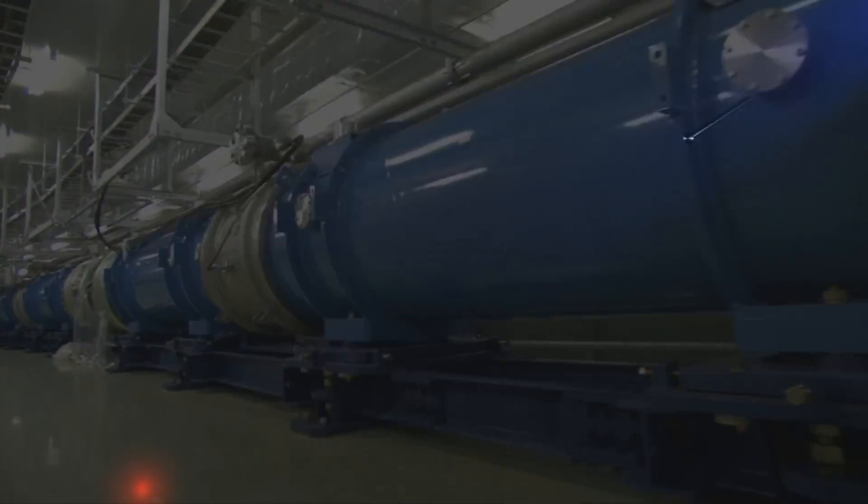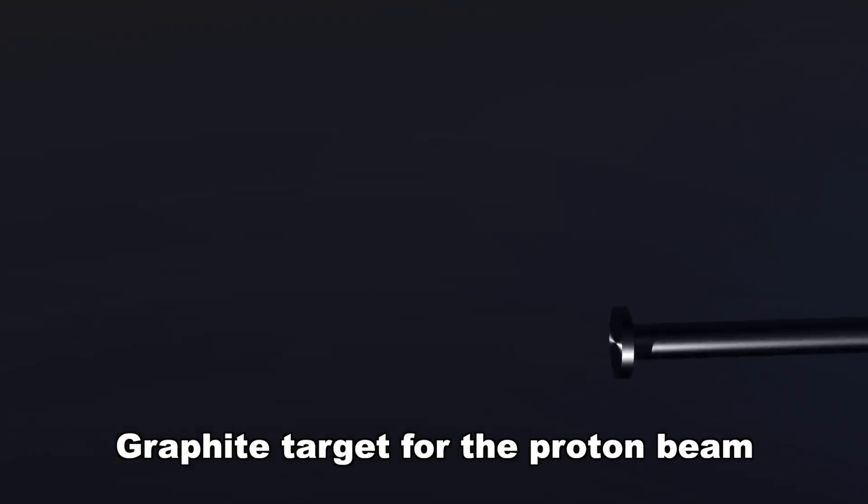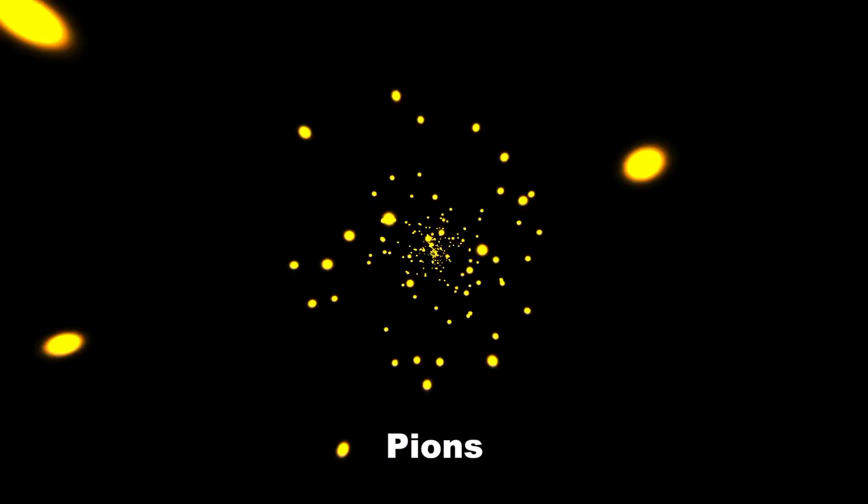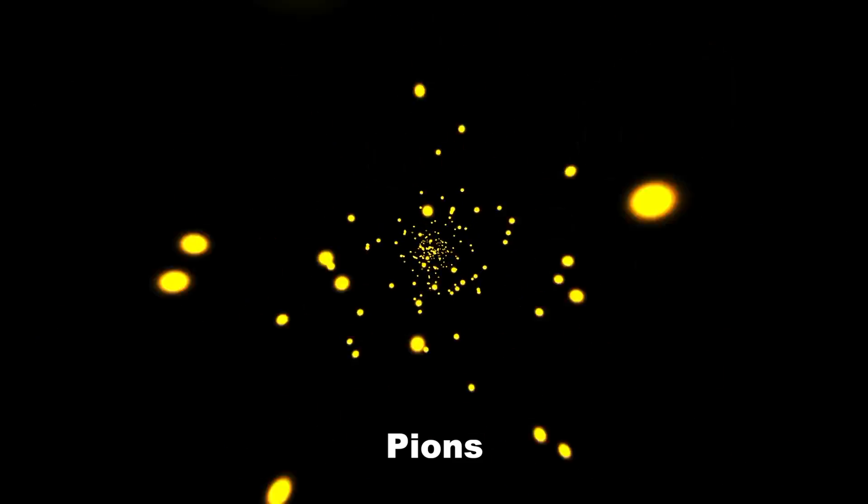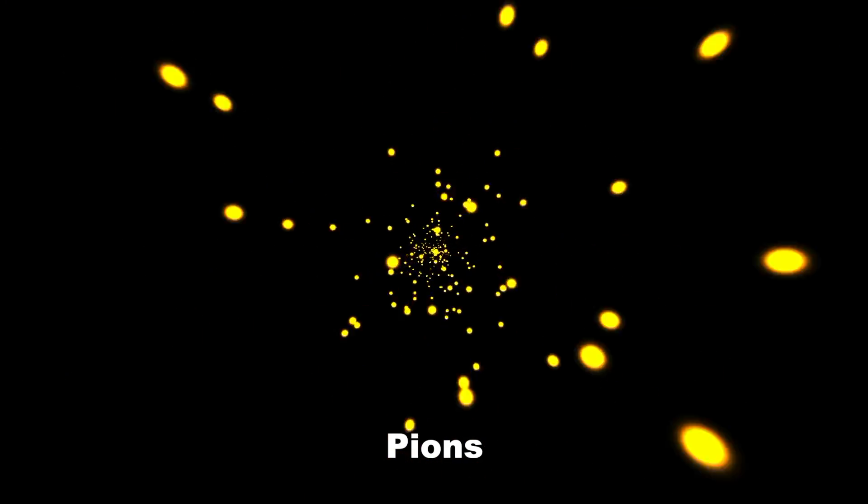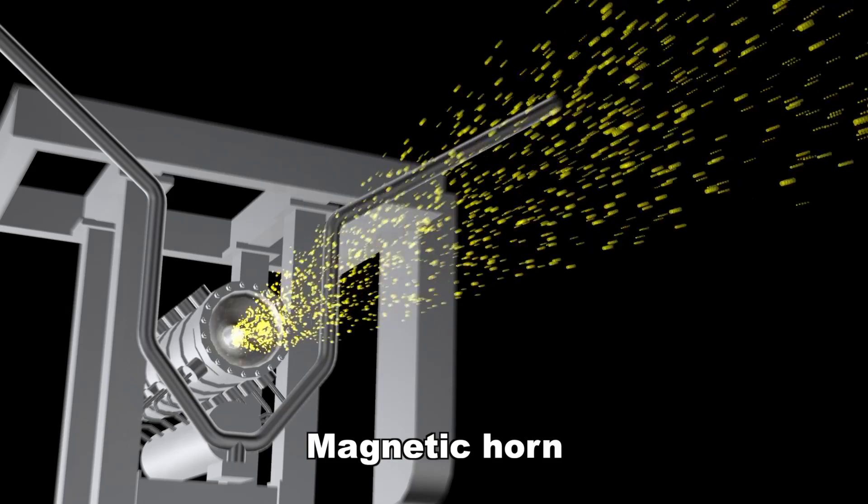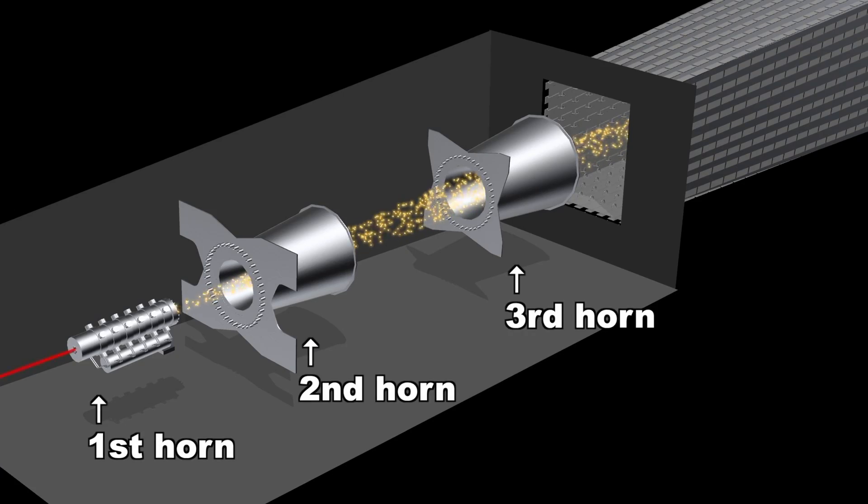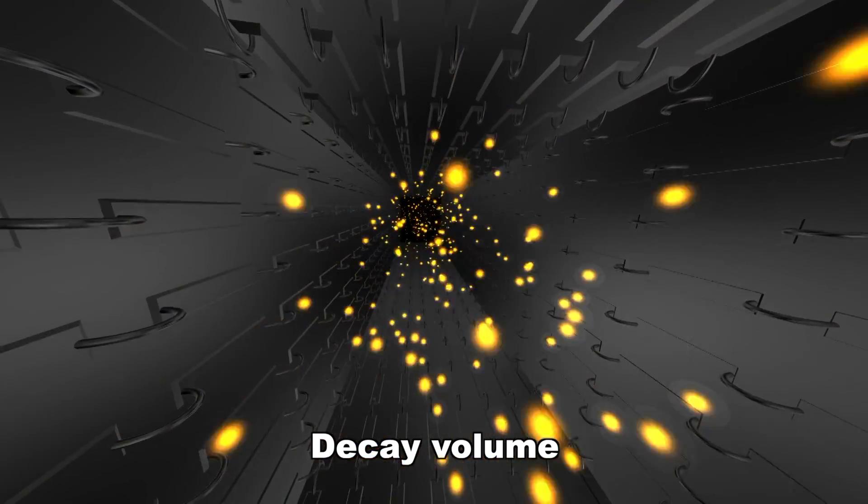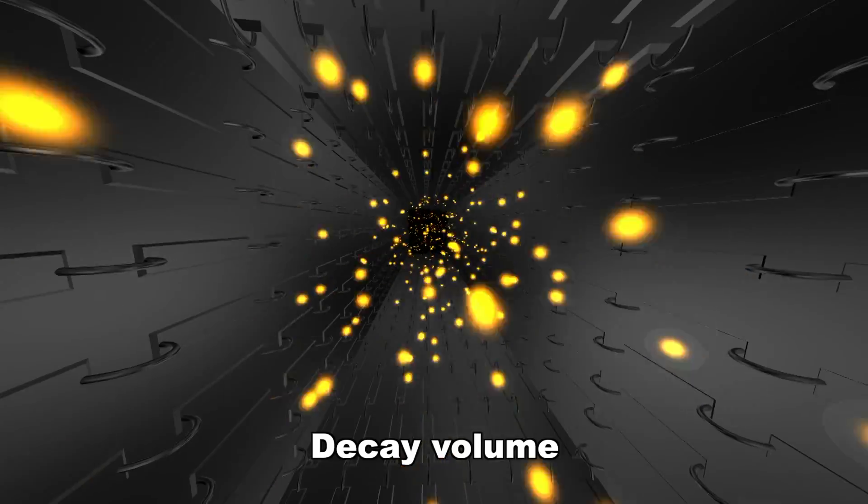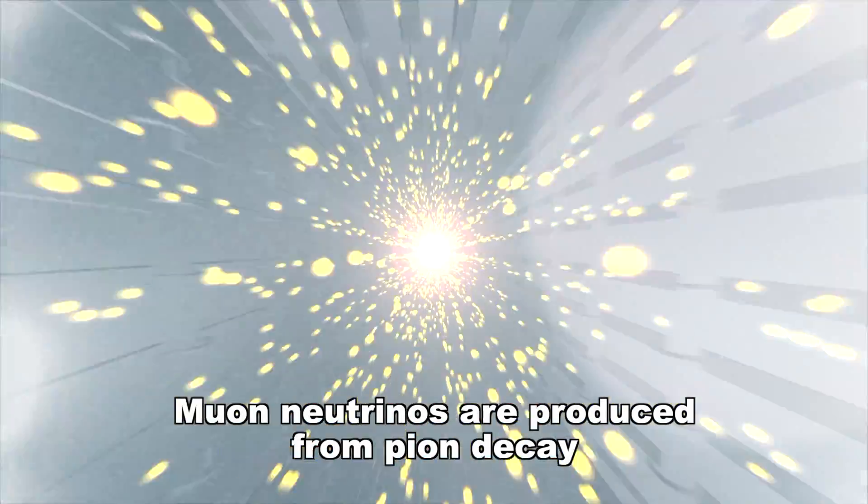The protons are then fired into a target made of graphite, which causes the generation of a huge number of particles called pions. These pions then need to be focused in the direction of Kamioka. This focusing is performed using three so-called magnetic horns, which are specially shaped electromagnets. After passing through these magnetic horns, they travel down a 100-meter space called the decay volume. In the decay volume, the pions decay, producing muon neutrinos as a product.